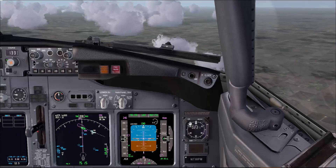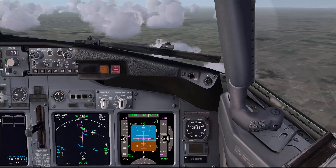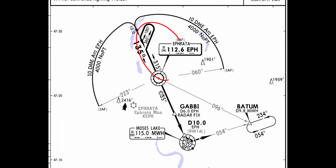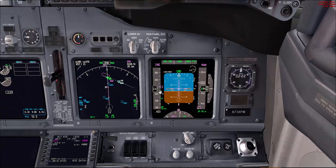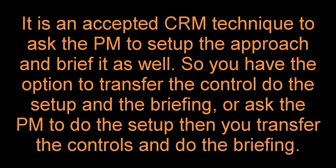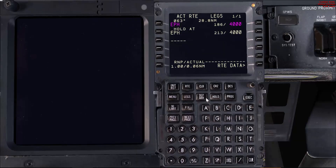Our clearance for now is to descend to 4000 and hold over Echo Papa Hotel, which is the final approach fix. So we'll be holding over Echo Papa Hotel at 4000 and report ready for the approach. What I do personally is after we transfer the controls, I'll both set up and brief the approach at the same time.